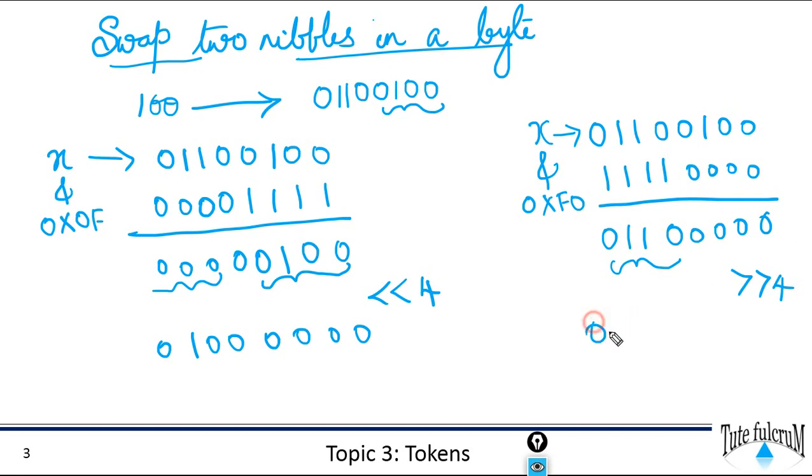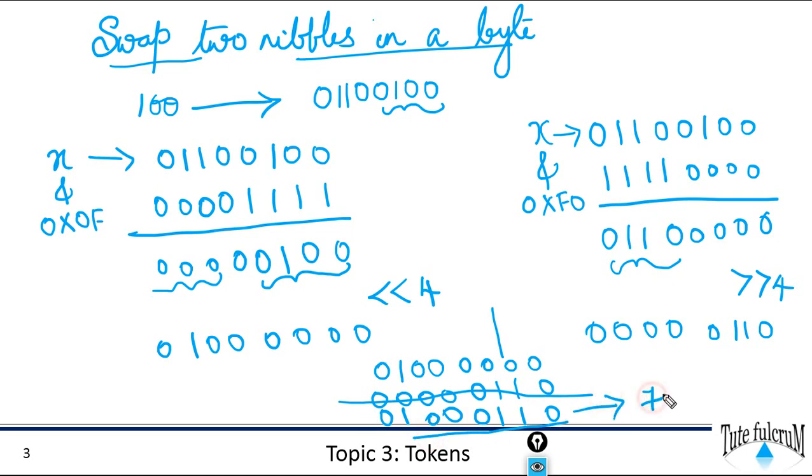So now if you combine these both. So to combine these two we will use an OR operator. So when you combine these after performing the bitwise OR operation here you could see that the nibbles are swapped. So 01000000 or with 00000110. What is our output? 01000110. So this is the expected output which is corresponding to the decimal value 70. So we have swapped our nibbles. So let's write the program and verify this.